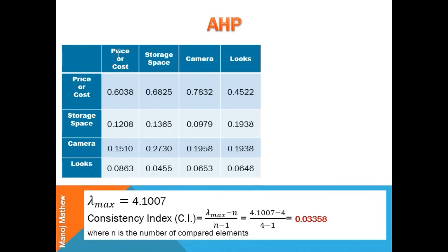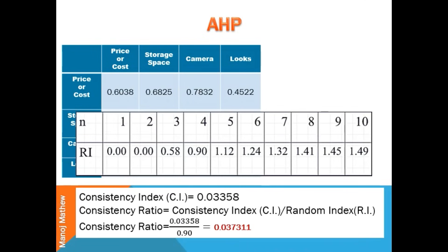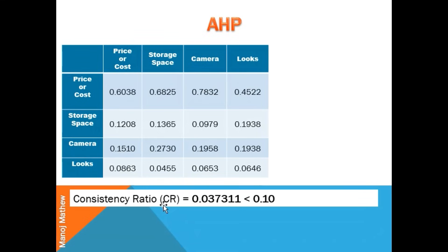Finally, we calculate the consistency ratio CR, which is given by dividing the consistency index by the random index RI. The random index is the consistency index of a randomly generated pairwise matrix. I have shown the random index table for up to 10 criteria. In our example, the random index for n equal to 4 is 0.90. The calculated consistency ratio CR is 0.037311, which is less than 0.10 — the standard threshold — so we can assume our matrix is reasonably consistent.